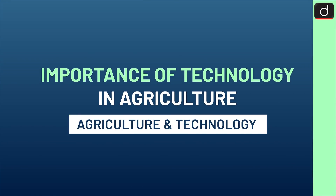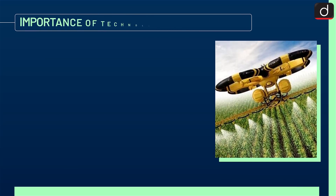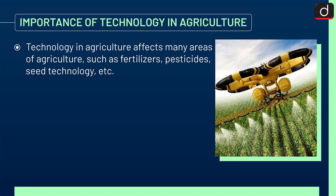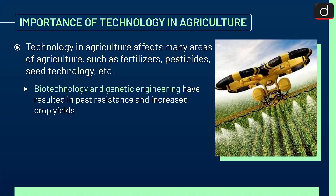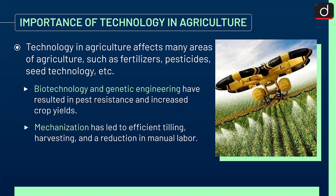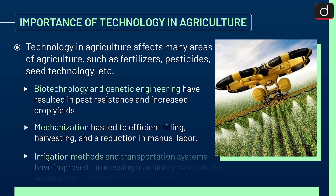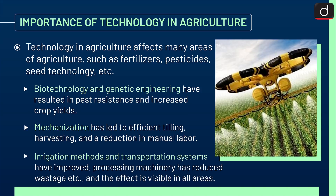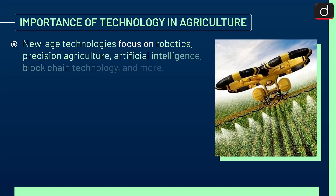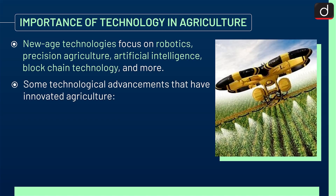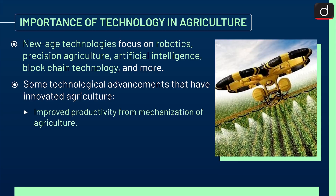Now let's discuss the importance of technology in agriculture. Technology affects many areas such as fertilizers, pesticides, and seed technology. Biotechnology and genetic engineering have resulted in pest resistance and increased crop yields. Mechanization has led to efficient tilling, harvesting, and a reduction in manual labor. Irrigation methods and transportation systems have improved, and processing machinery has reduced wastage. New age technologies focus on robotics, precision agriculture, artificial intelligence, and blockchain technology. Combined harvesters are finding greater use to reduce manual labor and make processes faster, especially since Indian farming is characterized by small land holdings.